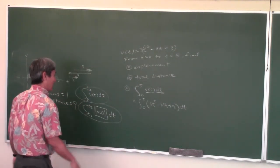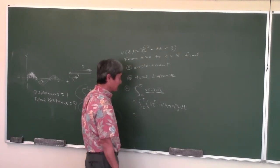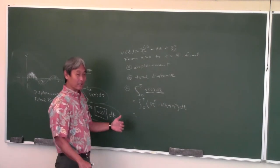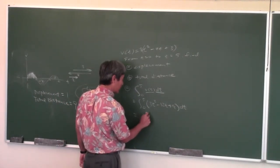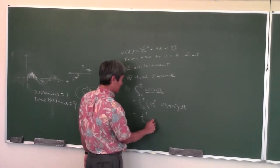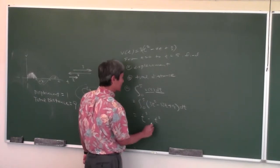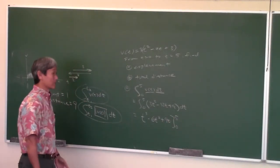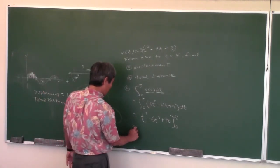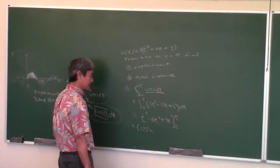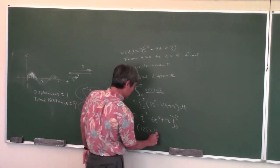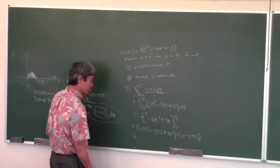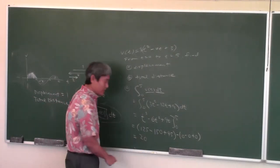To compute without a calculator, take the antiderivative: t³ − 6t² + 9t, evaluated from 0 to 5. Plug in 5: 125 − 150 + 45 = 20. Minus plugging in 0: 0. So the displacement is 20. That means after 5 seconds, the particle is 20 units to the right of where it started.